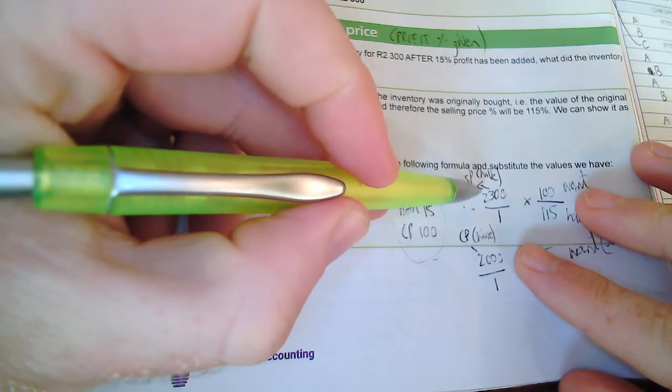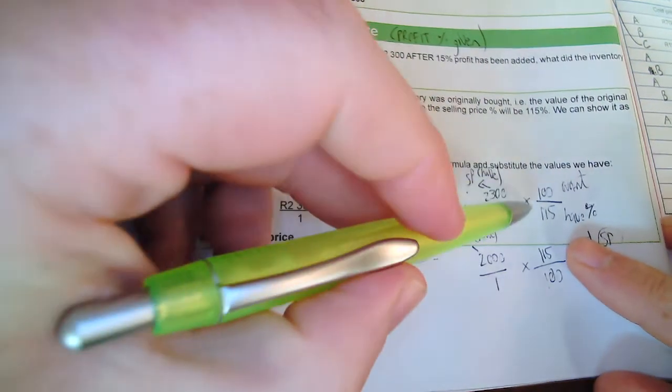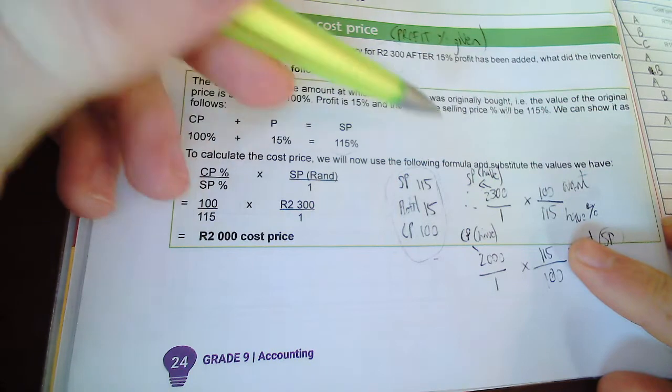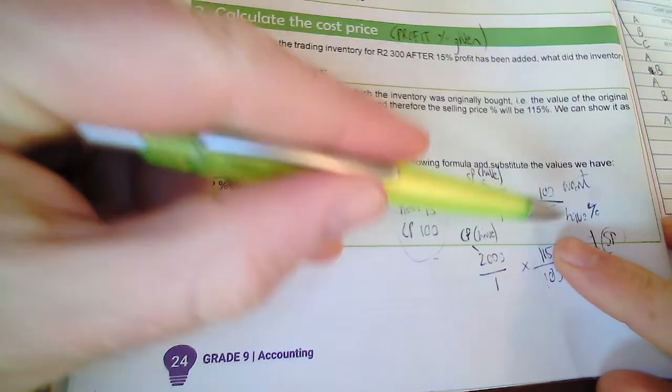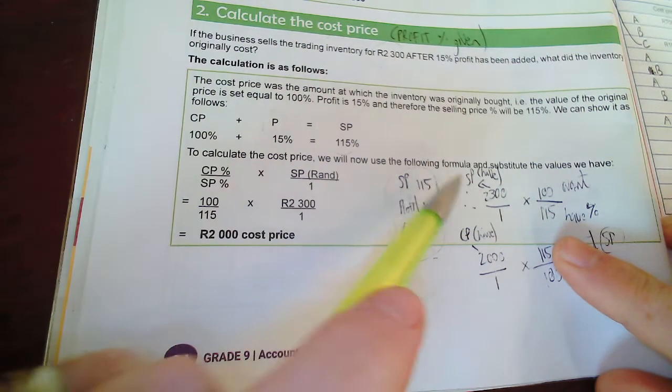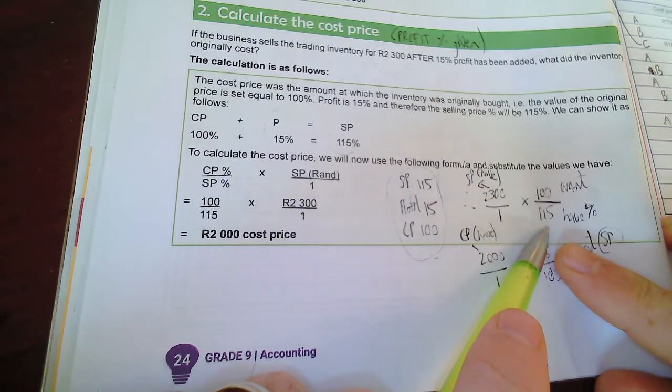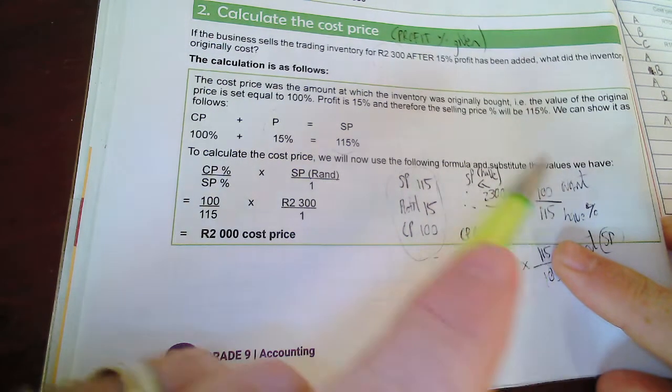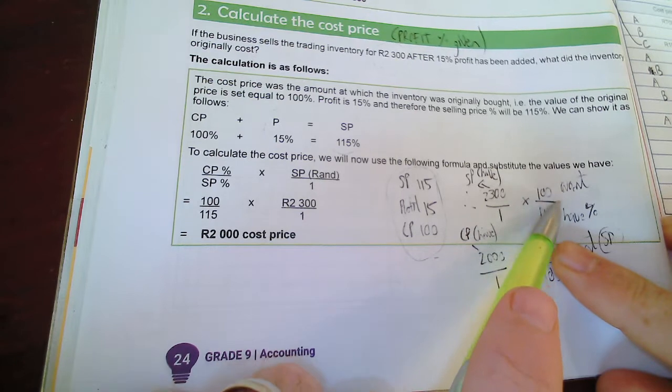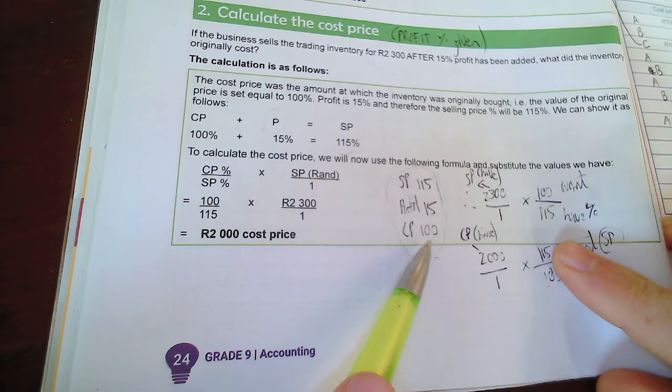So now, underneath the line, you put what you have but the percentage of that. So I have the selling price, I have to put the selling price percentage at the bottom. Okay, what do I want to work out? I put at the top that percentage, and I want to work out the cost price.